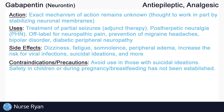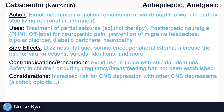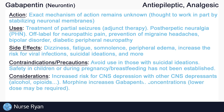It's important to be aware of the possible interactions with gabapentin. There may be an increased risk for CNS depression if used with other CNS depressants, like alcohol or opioids. Morphine has been shown to increase concentrations of gabapentin, so a dose adjustment may be required when taking these medications together. Antacids may decrease gabapentin's absorption, so do not take gabapentin within two hours of taking antacids.